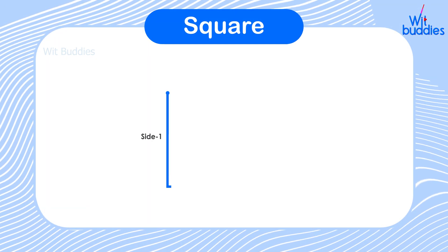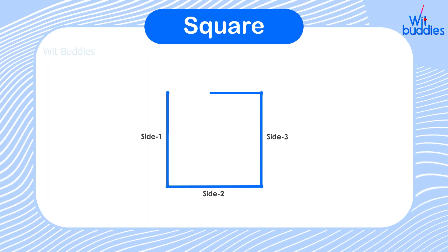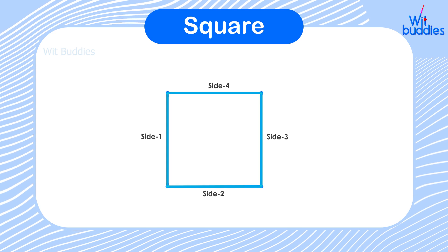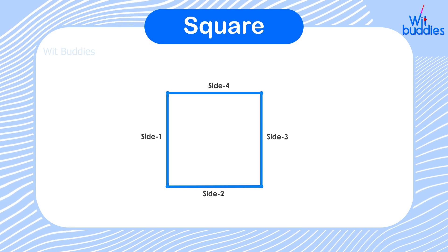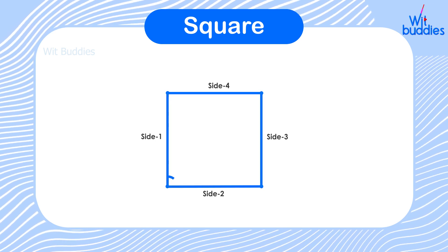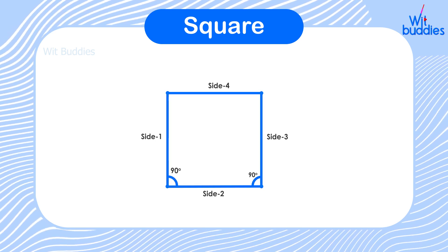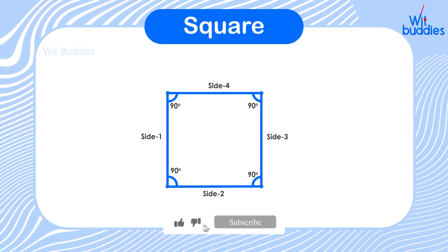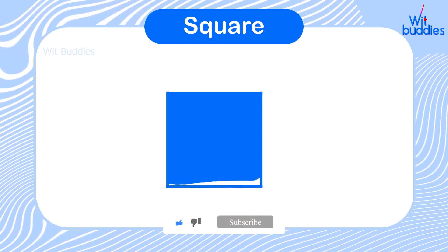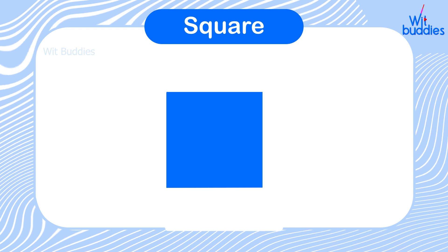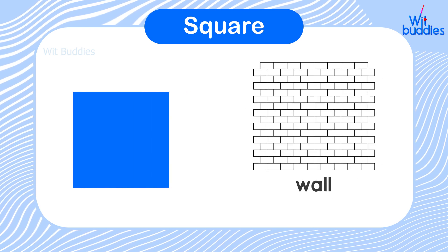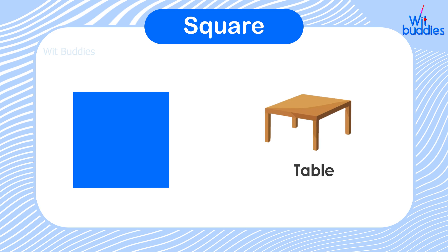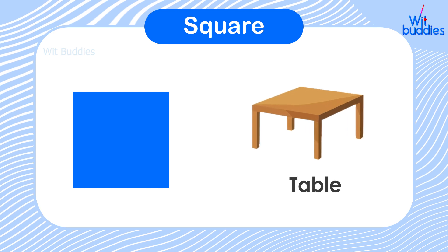Square: A square is a four-sided polygon, a 2D shape. Those four sides are equal in length and all the angles are equal to 90 degrees. A wall or a table where all the sides are equal are examples of a square shape.